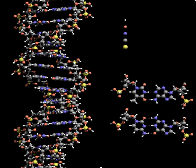In living organisms, DNA does not usually exist as a single strand, but instead as a pair of strands that are held tightly together. These two long strands entwine like vines in the shape of a double helix.